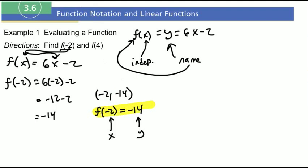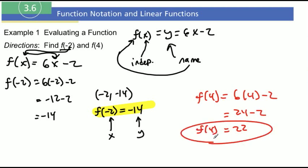But now we want to find f of 4. So now let's plug in 4. So 6 times 4 minus 2. And just simply evaluating. So 24 minus 2, which is just 22. So f of 4 equals 22.